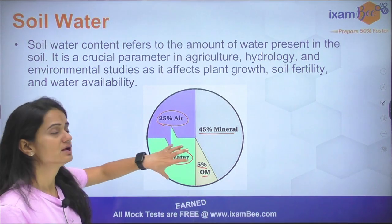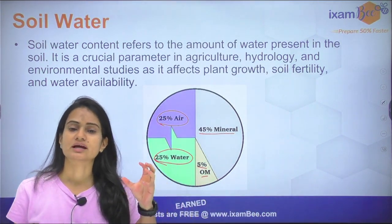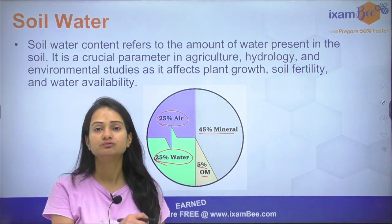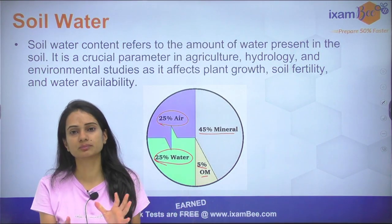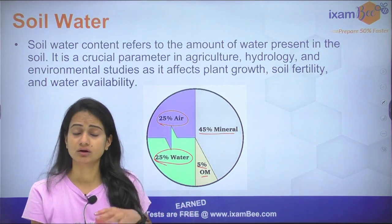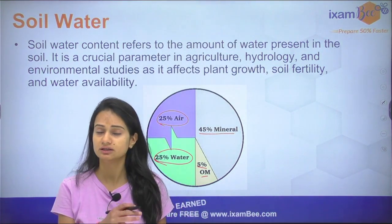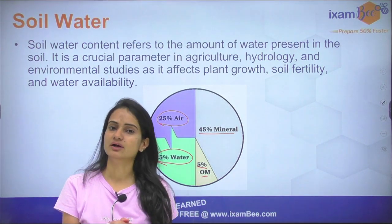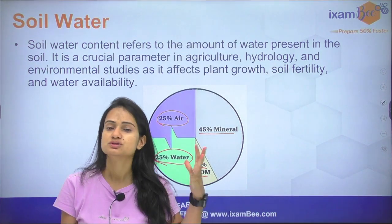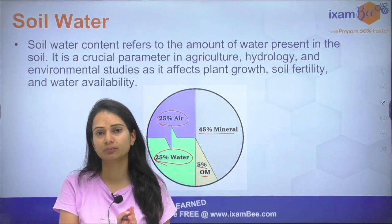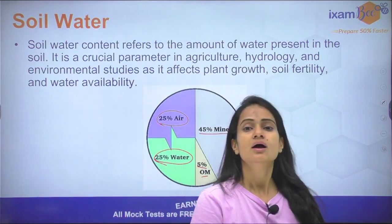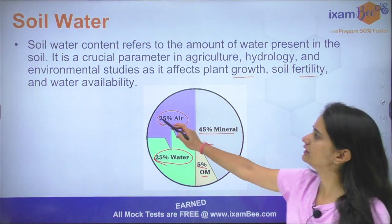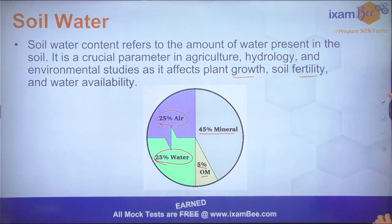Now, why is this water important? The water present in the soil is important for the proper growth of the plant and for proper productivity. If there is no water present, especially during the critical irrigation stages of different crops, if water is not available at that time, the overall yield of any crop is reduced. That's why soil water is very important for plant growth, soil fertility, and water availability for the plant.